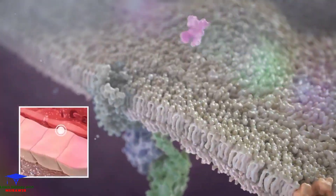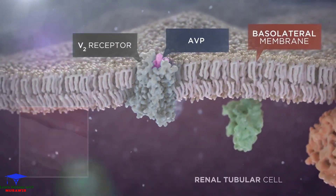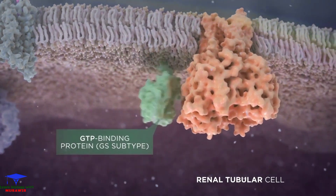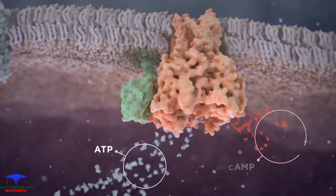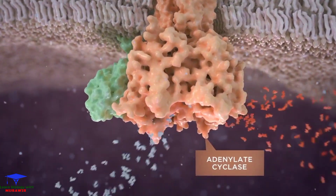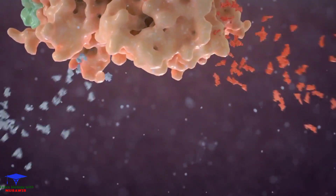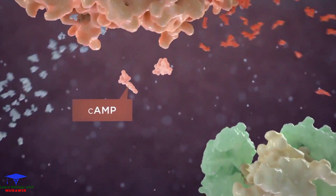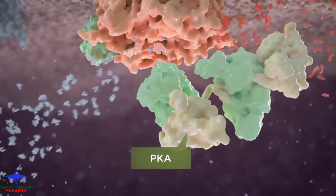AVP stimulation of V2 receptors, located in the basolateral membrane of the renal tubular cell, activates a Gs subtype of guanosine 5' triphosphate (GTP) binding protein, which in turn activates adenylate cyclase. The result is an increased concentration of 3' 5' cyclic adenosine monophosphate, cAMP, as well as activation of protein kinase A, PKA.